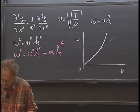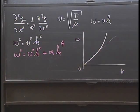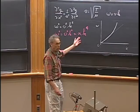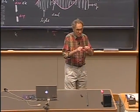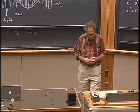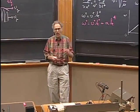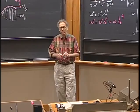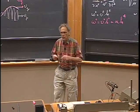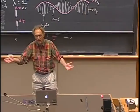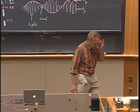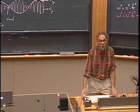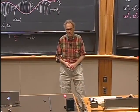A piano string being dispersive has major consequences. The values of alpha depend on the string — a very thick string is very stiff and alpha will be high; a high Young's modulus also increases alpha. There is no one value for alpha for all piano strings. I want to do a calculation to give an order-of-magnitude idea of the effect on a piano.